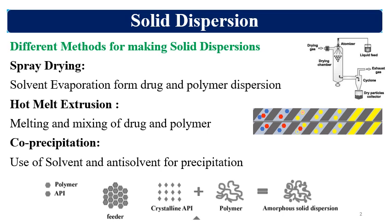Hot melt extrusion involves melting and mixing the drug and polymer. In both techniques, the polymer acts as a solvent for the drug, and since the resultant mixture is solid, it is called a solid dispersion — essentially a solid solution.